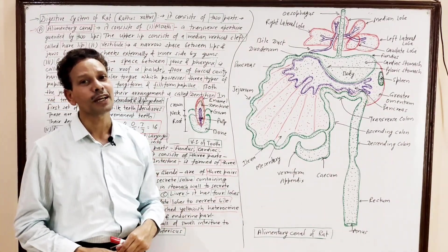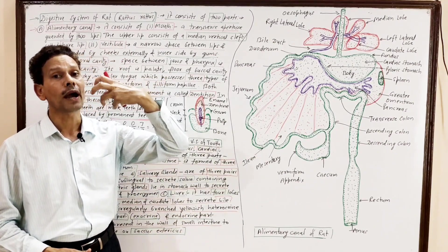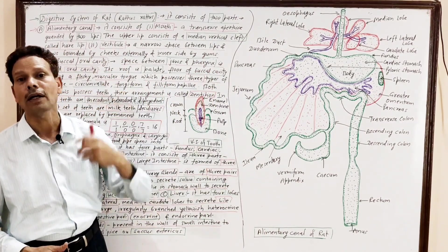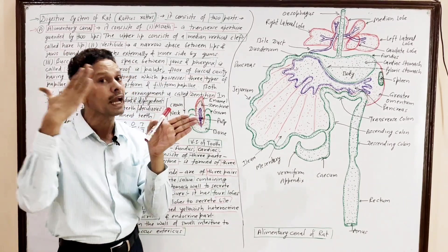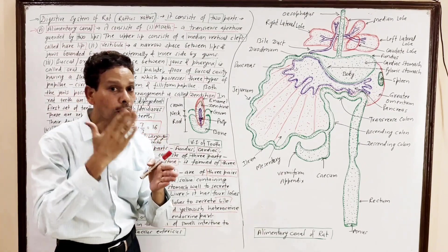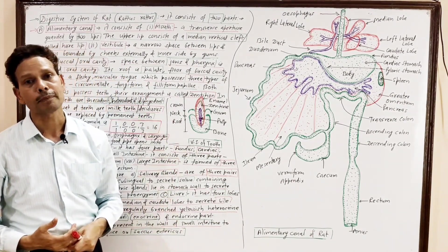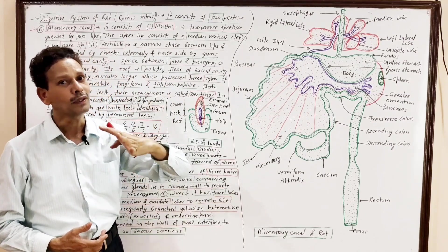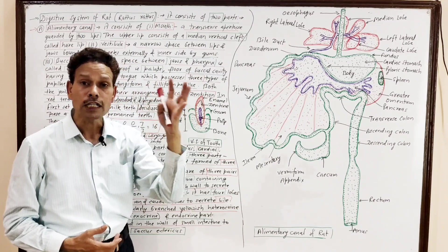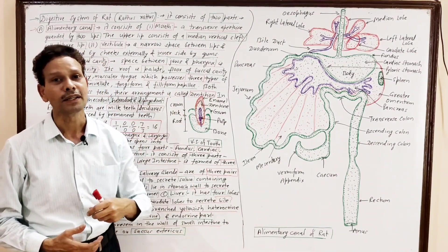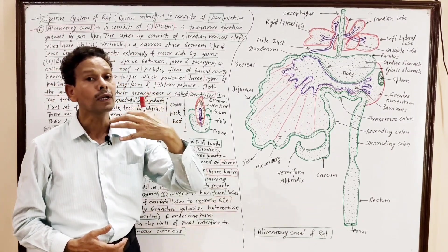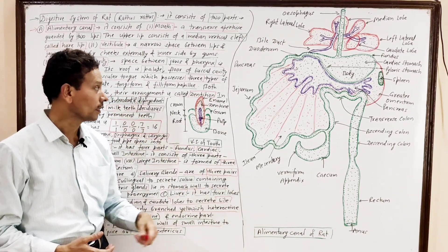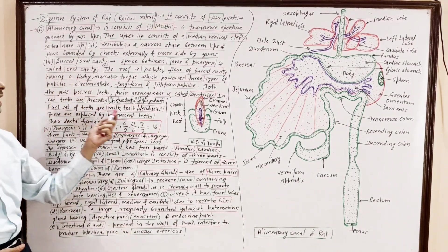The third part is the oral cavity or buccal cavity. Note down: first part is mouth, second part is vestibule, third part is oral cavity or buccal cavity. The buccal cavity lies between the jaws and pharynx. The roof of the buccal cavity is the palate, which has transverse rugae. The floor consists of a muscular, movable tongue.